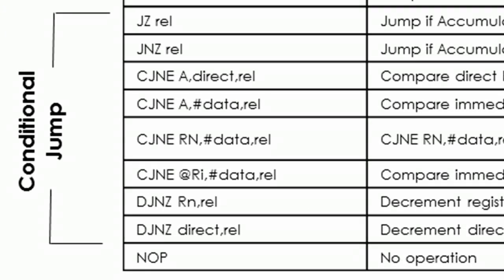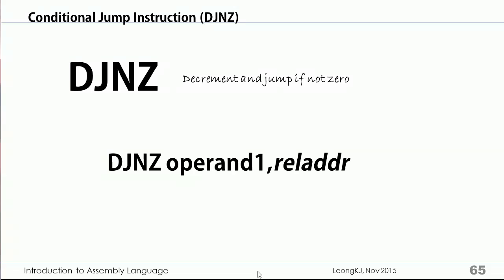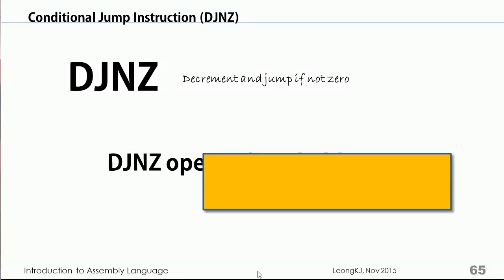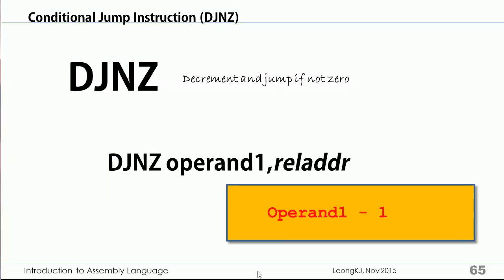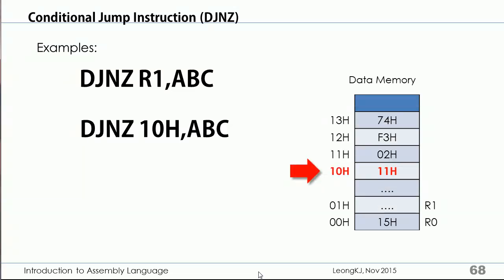Now let's look at the DJNZ instruction — Decrement and Jump if Not Zero. This is its syntax: Operand 1 is decremented by 1, and if the result is not 0, the program jumps to the relative address. For example, DJNZ R1, ABC decrements Register R1 and jumps to ABC if not zero. DJNZ 10h, ABC decrements the content at data address 10h by 1 and jumps to ABC if not zero.